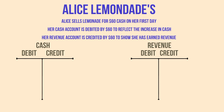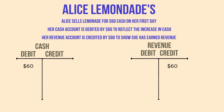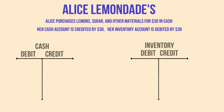Alice sells lemonade for $60 cash during her first day. Her cash account is debited by $60 to reflect the increase in cash, and her revenue account is credited by $60 to show she has earned revenue. Alice then purchases lemons, sugar, and other materials for $30 in cash. Her cash account is credited by $30 indicating a decrease, and her inventory account is debited by $30 indicating she has acquired assets — lemons and sugar — for her business.